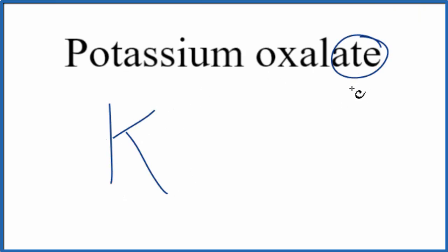For the oxalate, you see the ATE on the end here. That means this is going to be a polyatomic ion. So you either memorize the oxalate ion, which is C2O4 with a charge of 2 minus, or if you're allowed, you can look it up on a table of polyatomic ions.